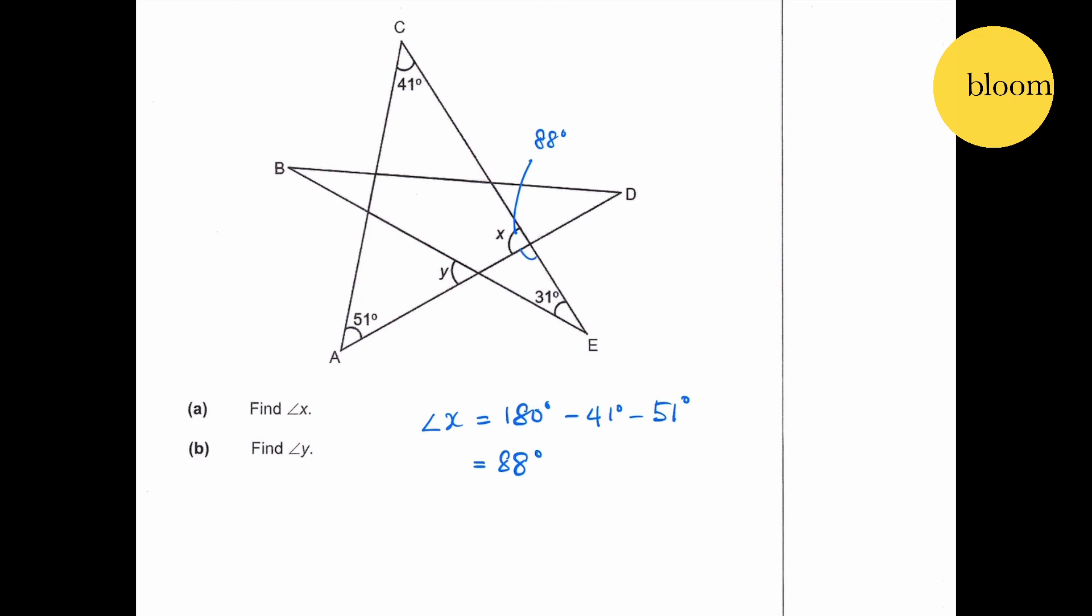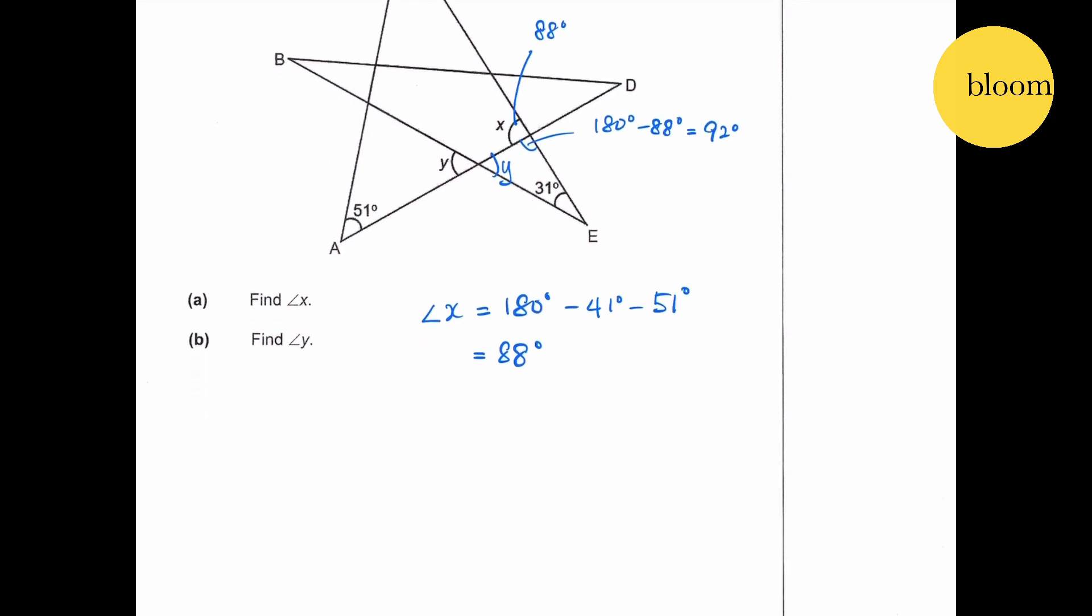This will be Y. Therefore, this will be 180 degrees minus 88 degrees, which is 92 degrees. And you see that this is another triangle.